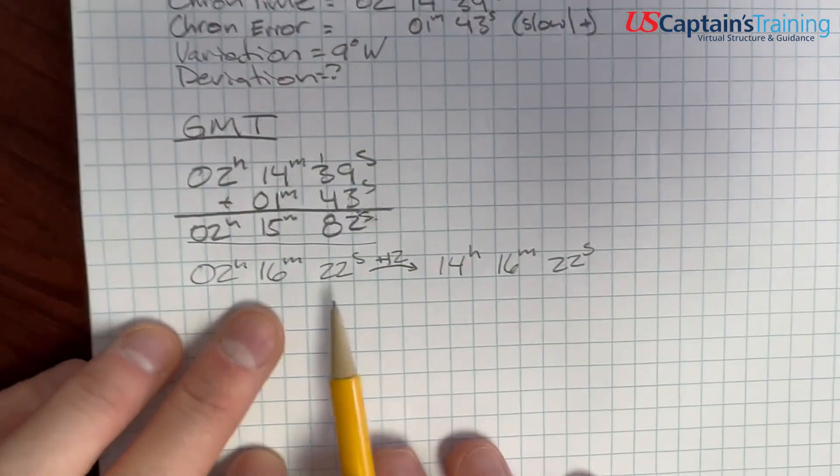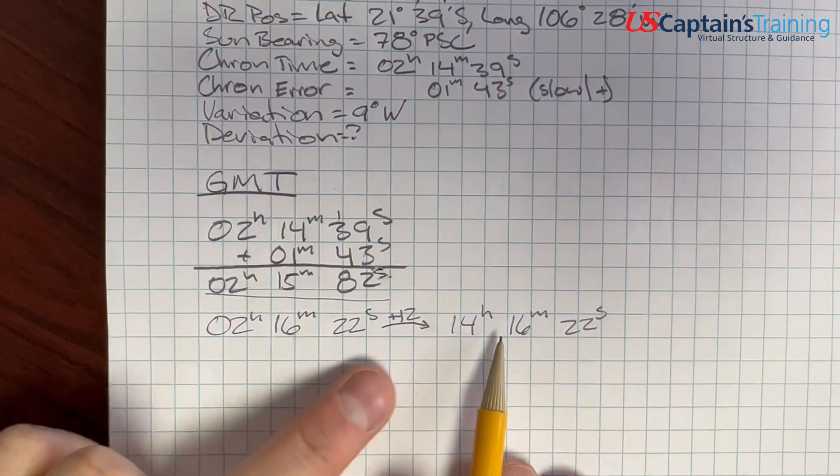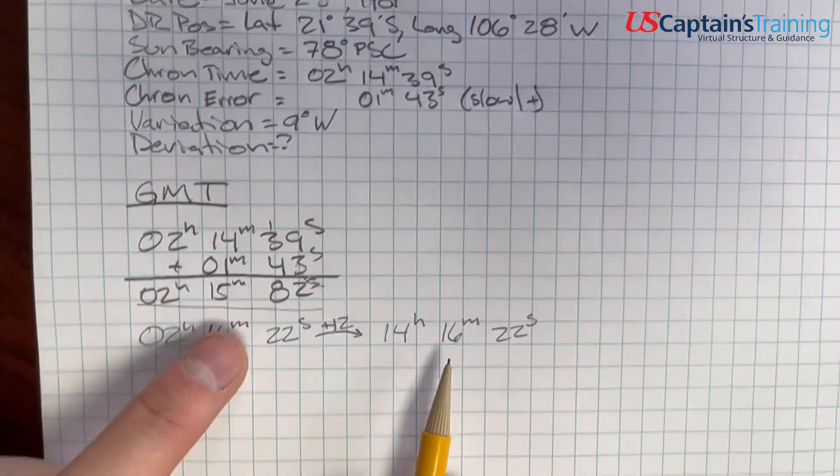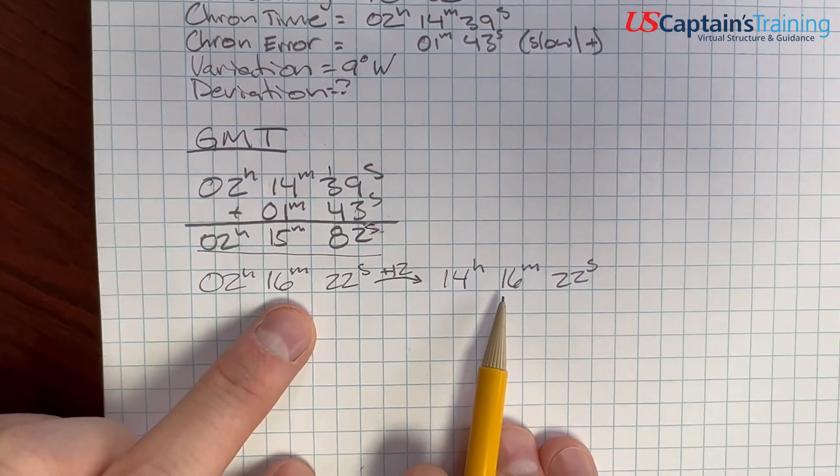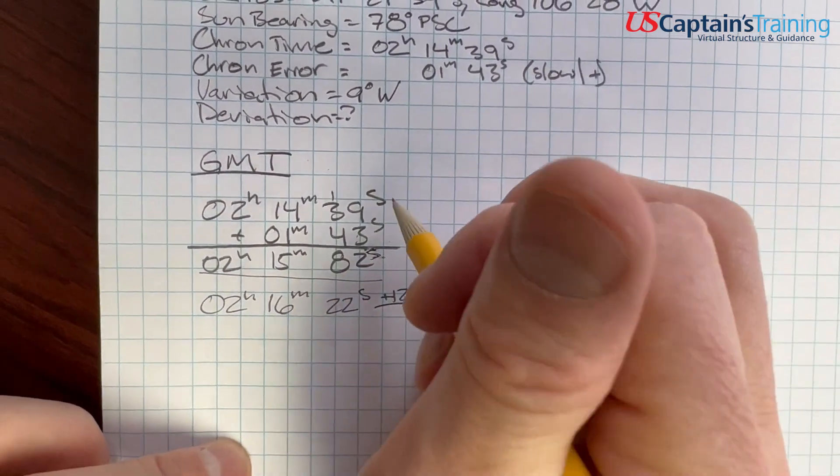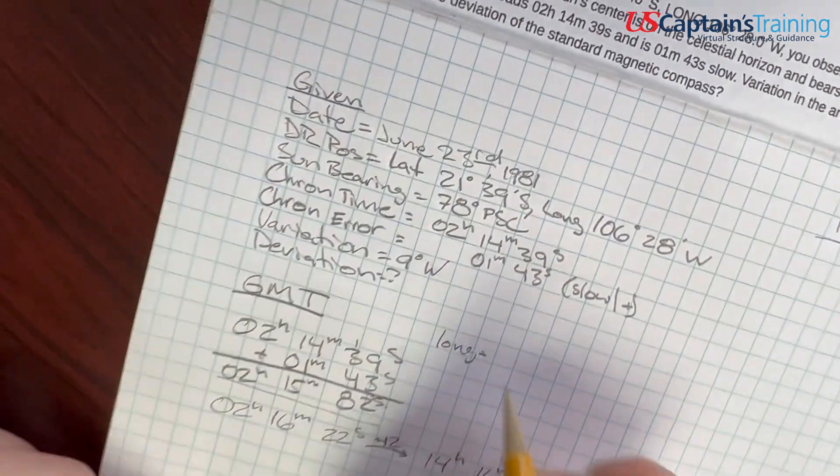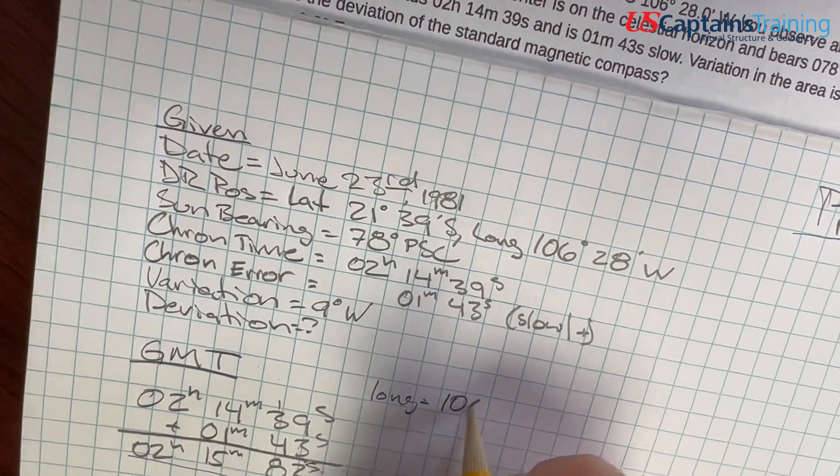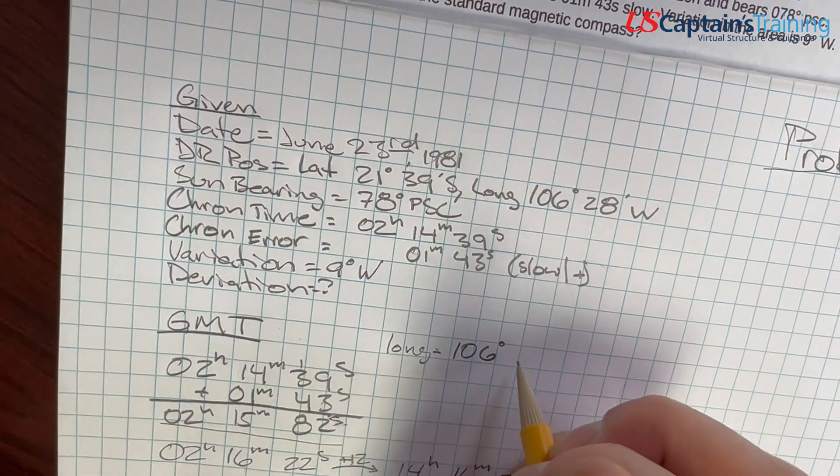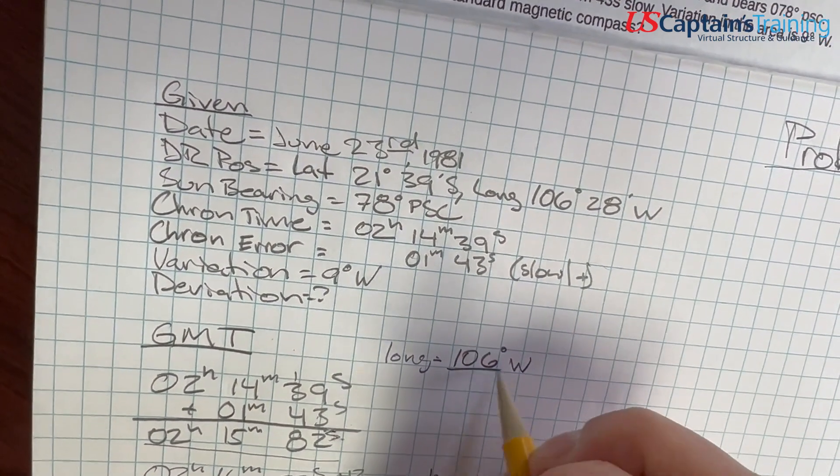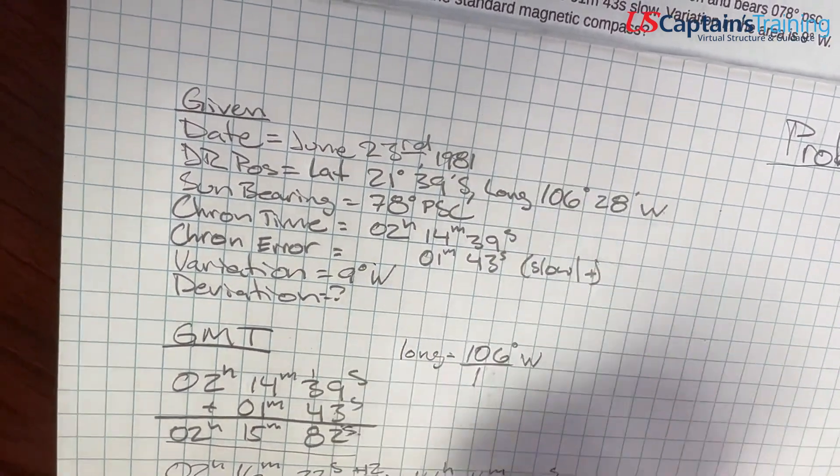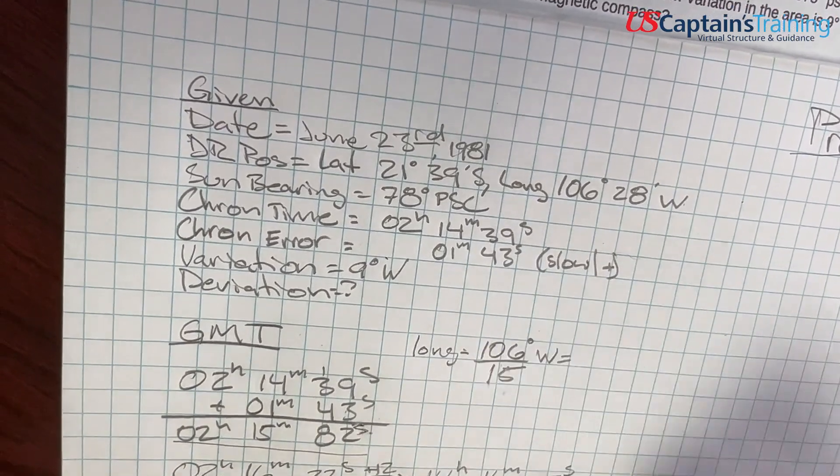So which one are we? Are we here or are we here? What we have to do to figure out, we need to figure out our LMT, which is Local Mean Time, to figure out if it's day or night. So we just get the longitude. Our longitude equals 106 degrees. We're not even going to account for the minutes because this is going to just be an average, and we're to the west.